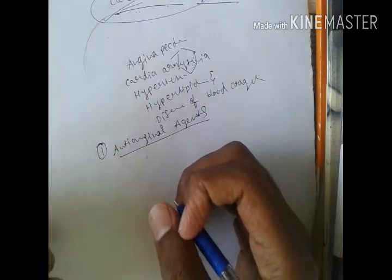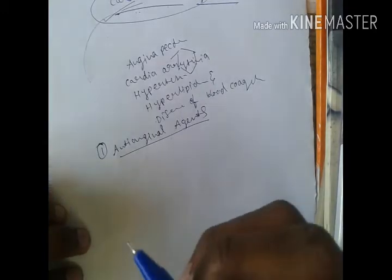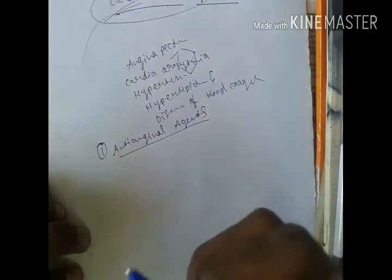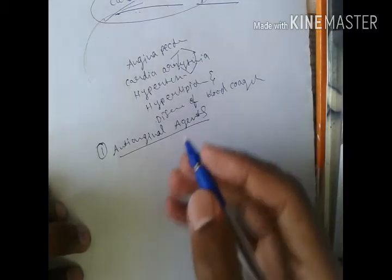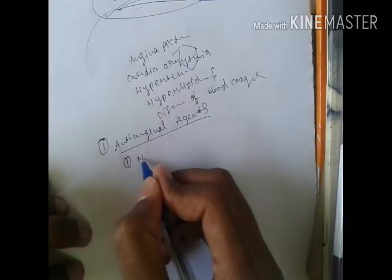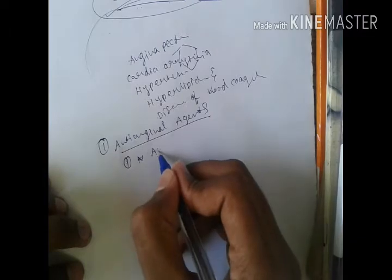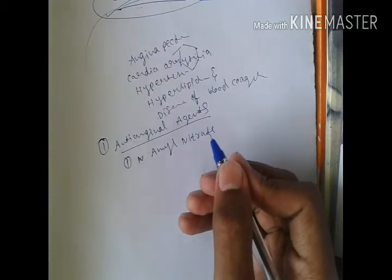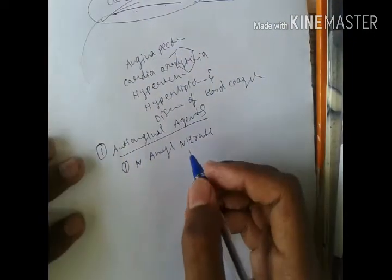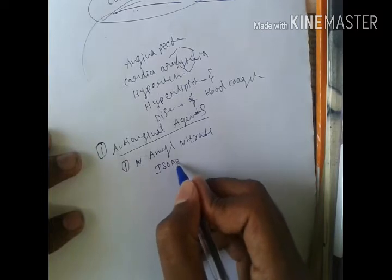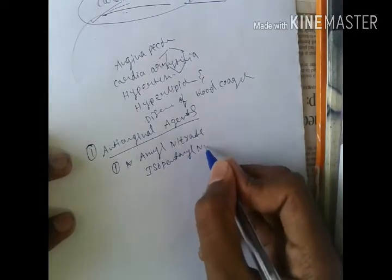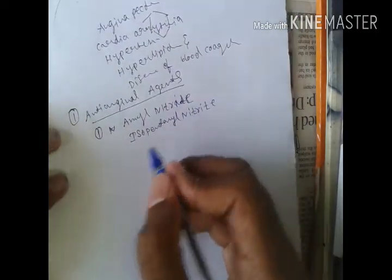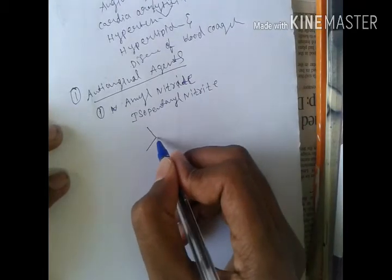The first drug is amyl nitrite, also known as isopentanyl nitrite. First you have to write isopentanyl. See, this is isopentanyl nitrite.